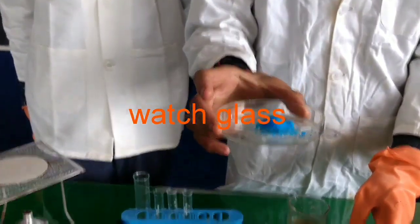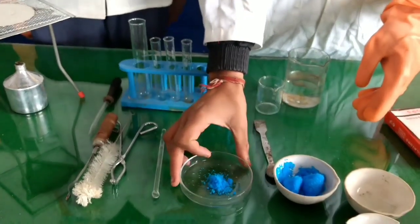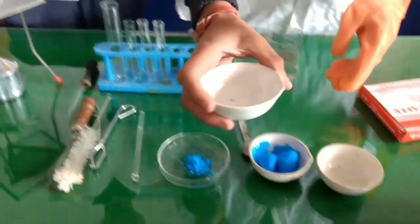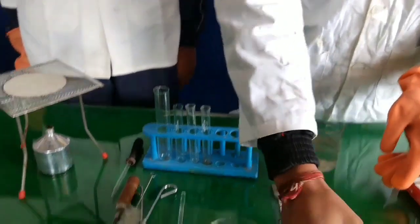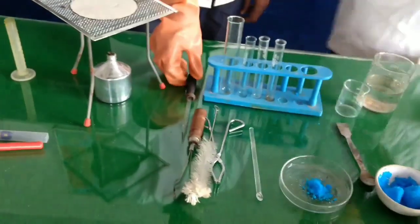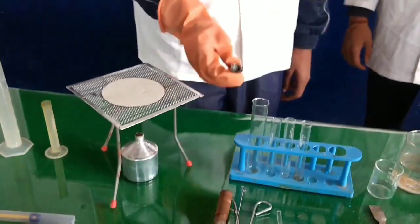Similarly, when you hold the solid in any bowl-like structure, then it is the china dish. And when you keep the solid in the transparent glass, then it is watch glass.